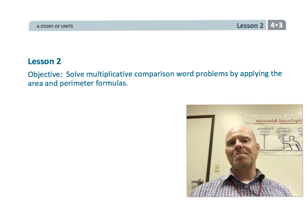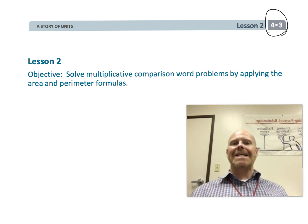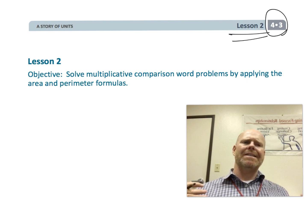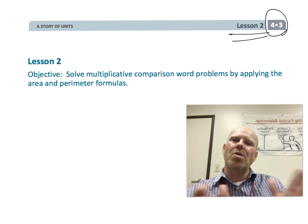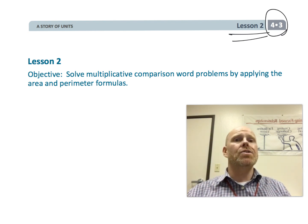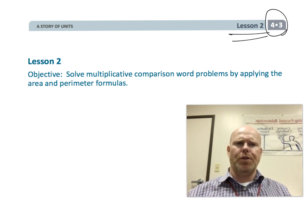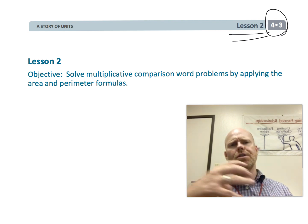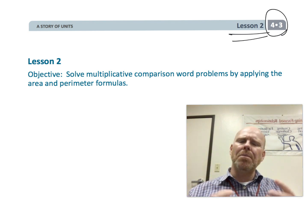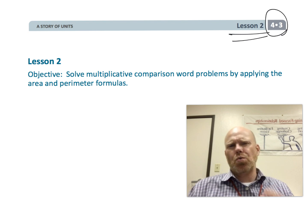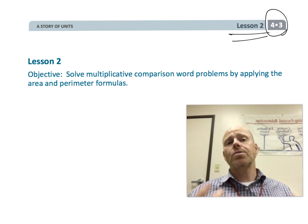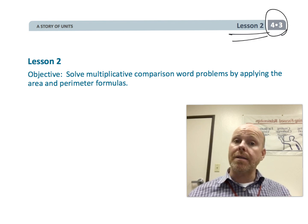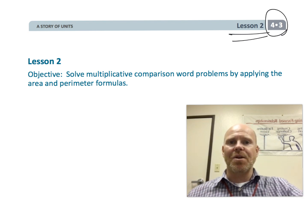This is fourth grade module three, lesson two. In this lesson we're going to be solving multiplicative comparison word problems by applying area and perimeter formulas. Basically, we're going to be using word problems where students are told things like the length is three times as long as the width — that kind of vocabulary, that multiplicative comparison: twice as big or three times as long. Students are going to be taught to use drawings to help them organize their thinking.